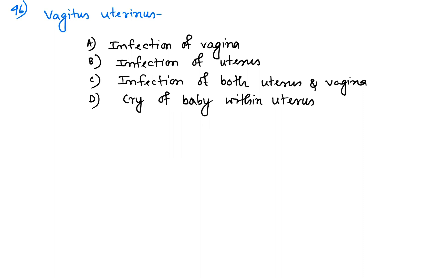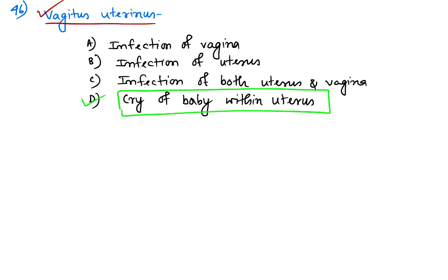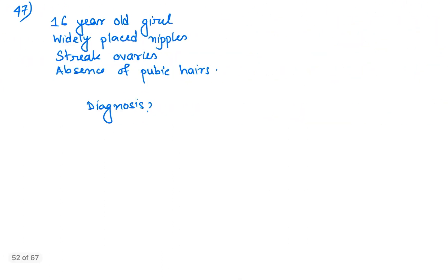Question number 46: what is vagitus uterinus? It is not any kind of infection — not of the vagina, uterus, or both. Rather, it is a special term that explains the cry of the baby within the uterus. So vagitus uterinus means cry of the baby within the uterus.